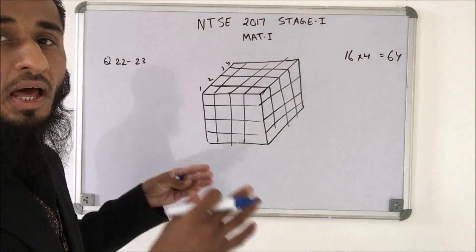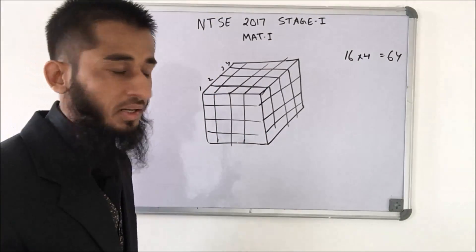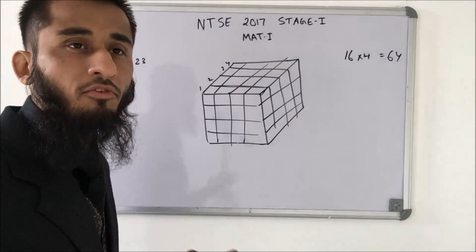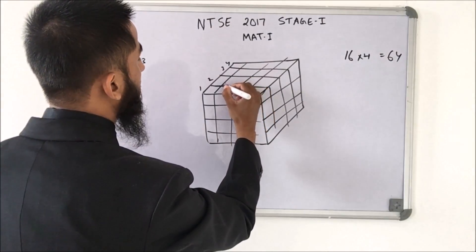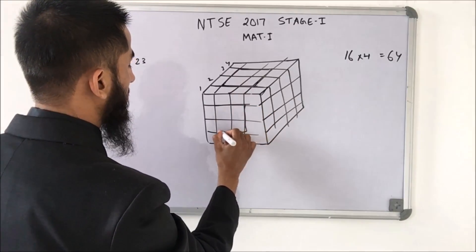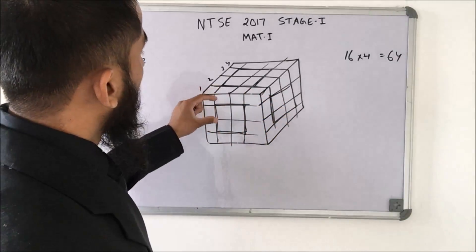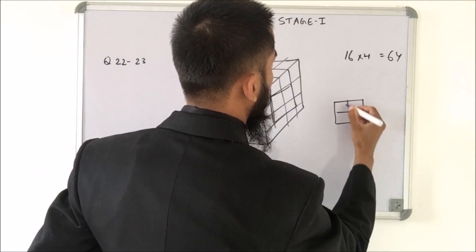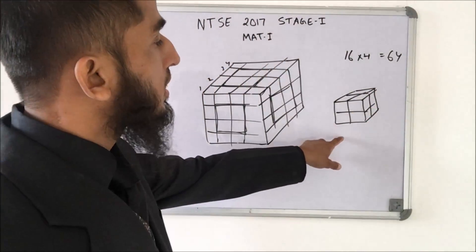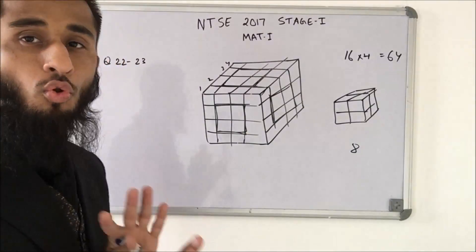All the cubes which are inside — not on the surface but interior — will have no faces painted. Inside, I will have a 2×2×2 inner cube. Counting: 4 on one layer and 2 blocks gives 8 total. So 8 cubes in the interior will have no faces painted.